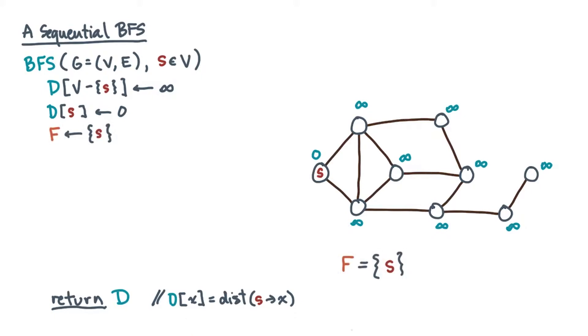Now, the algorithm will also maintain a queue F of unvisited vertices. Initially, F just contains the source s. As long as F is nonempty, the algorithm does the following.